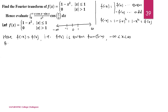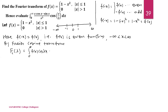By the Fourier cosine transform, the cosine transform F_c(λ) is equal to the integral from 0 to infinity of f(x) cos(λx) dx.